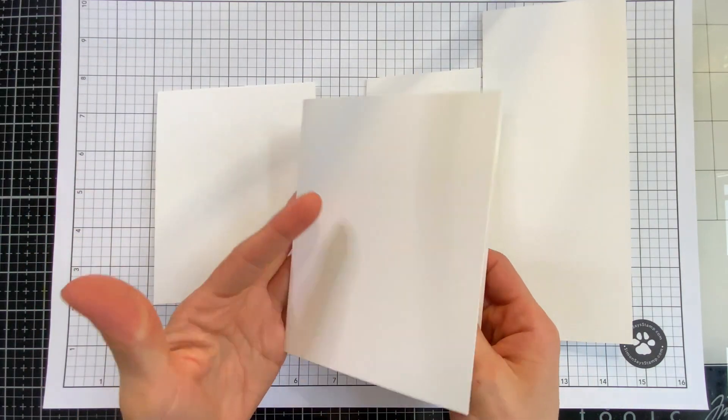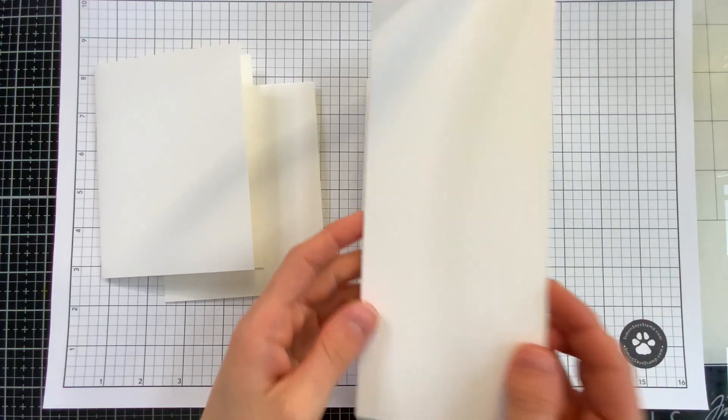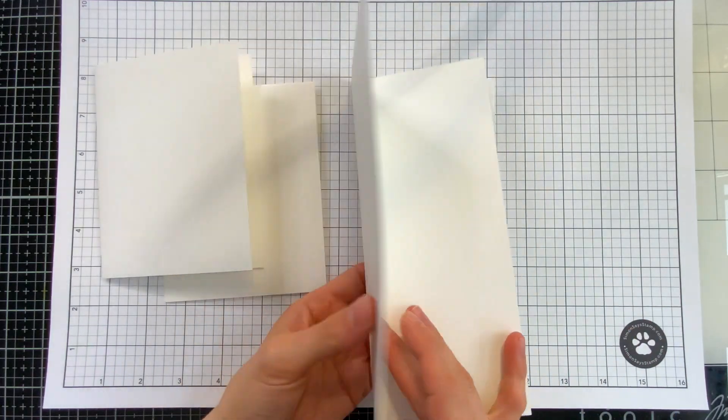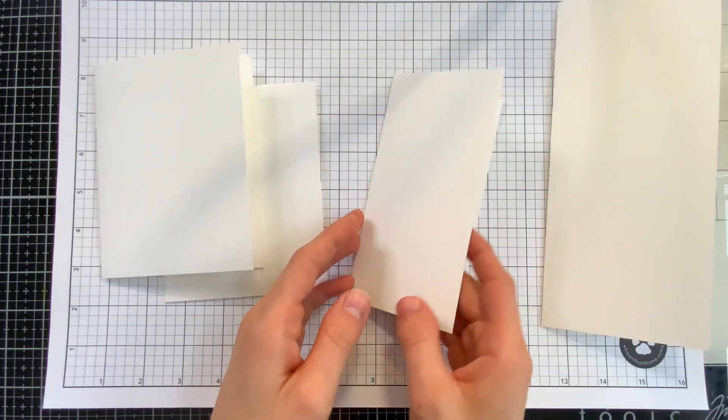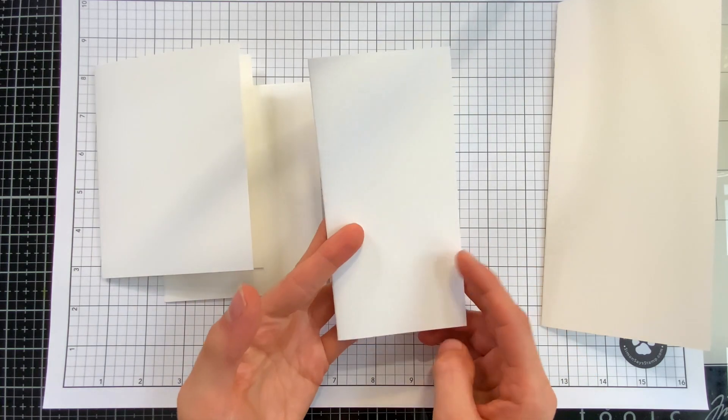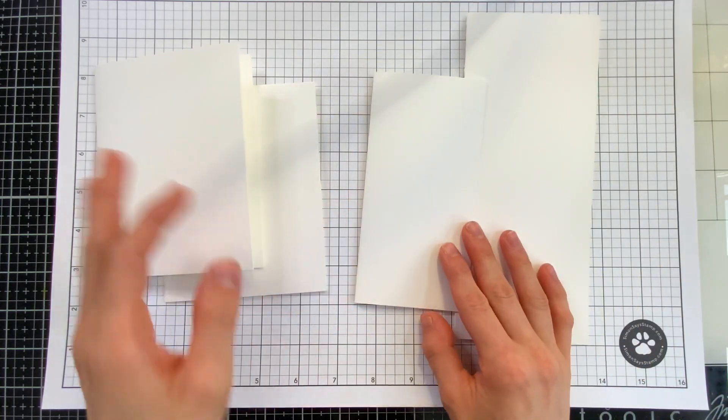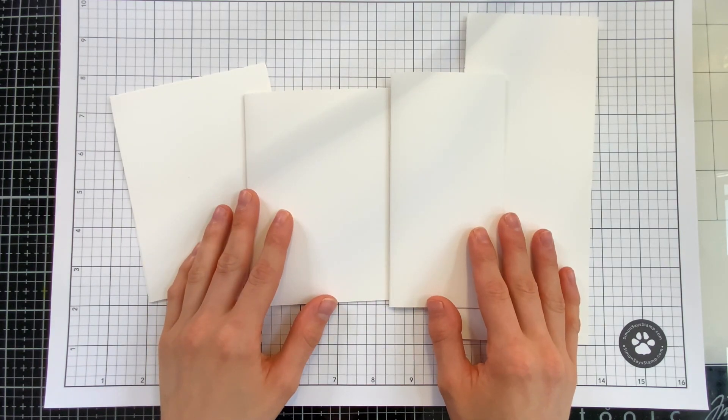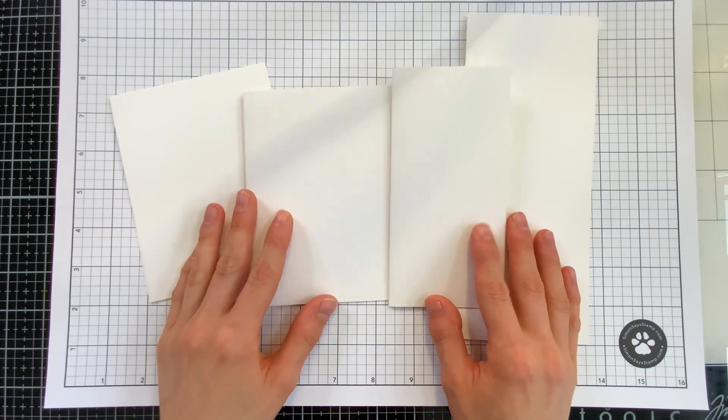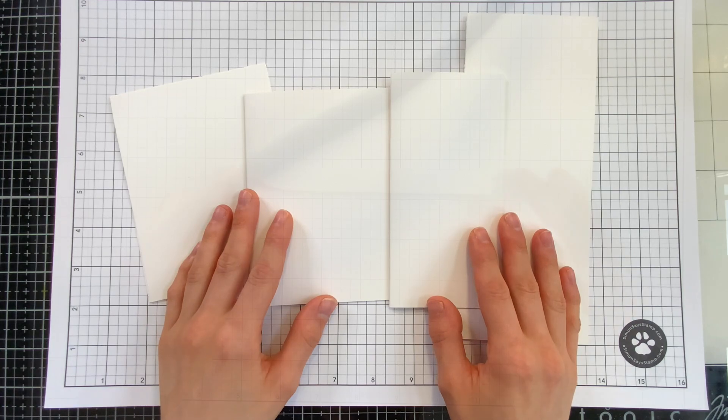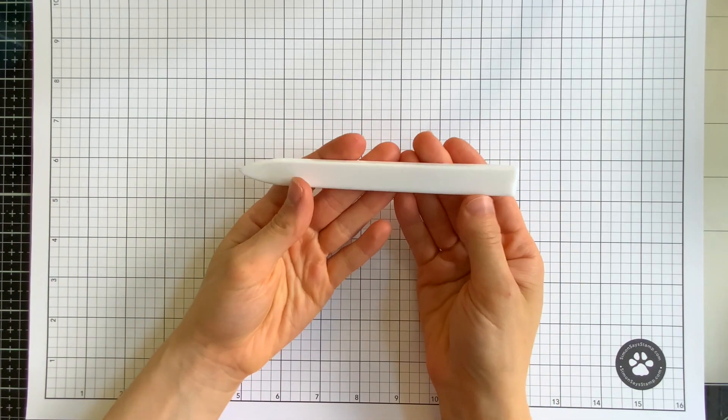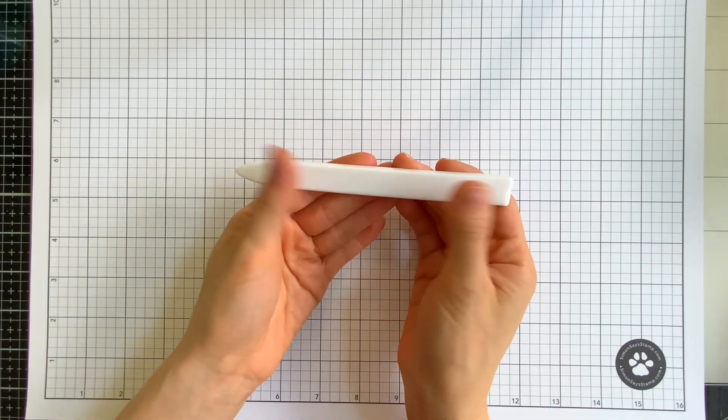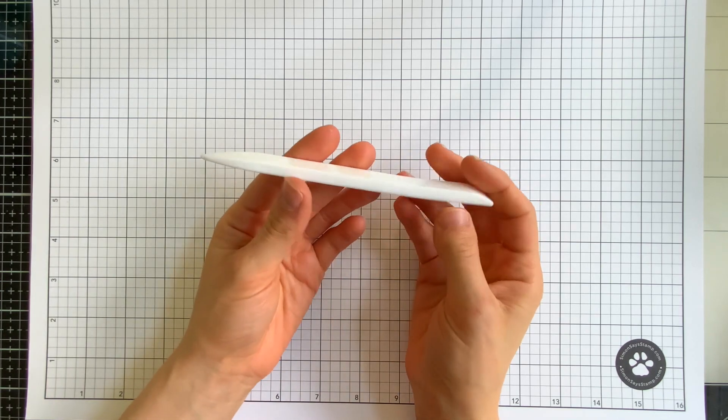both of which are four and a quarter by five and a half slimline at about three and a half by eight and a half and mini slimline at three and one eighth by six and a quarter. Each size comes in a pack of 10. While you're creating simply reach for one of these fold it in half and save yourself the time of having to make one from scratch.